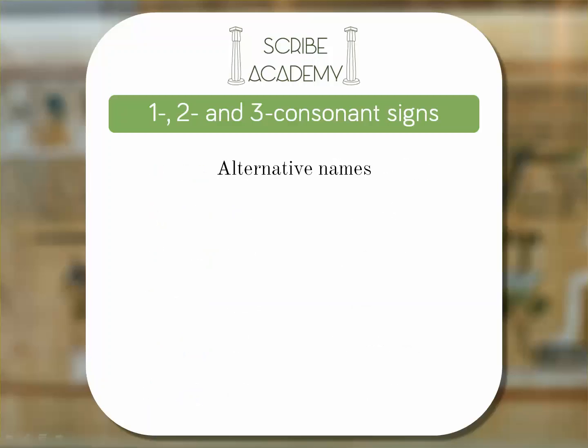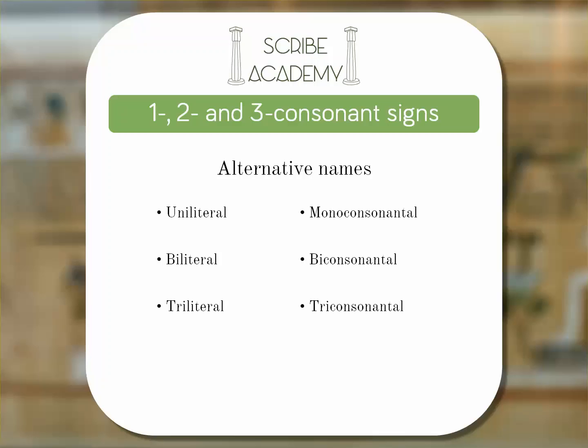Finally, you may see alternative sets of terms used by some Egyptologists: these are uniliteral, bilateral, and triliteral — or monoconsonantal, biconsonantal, and triconsonantal.